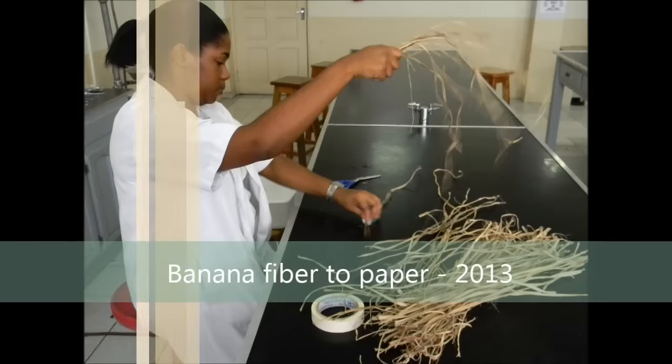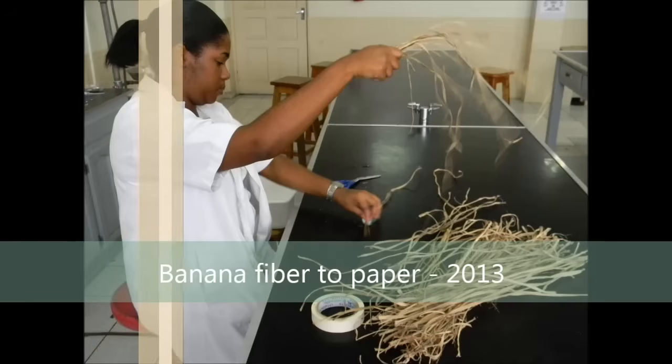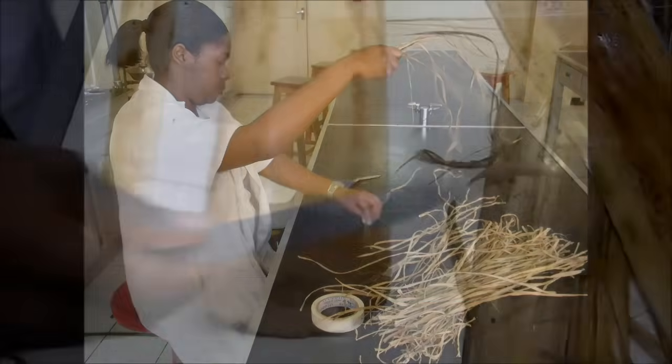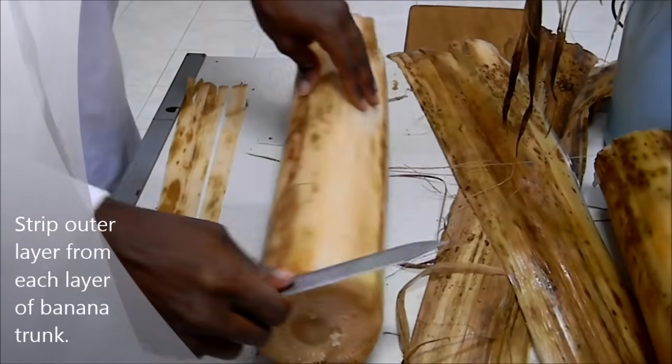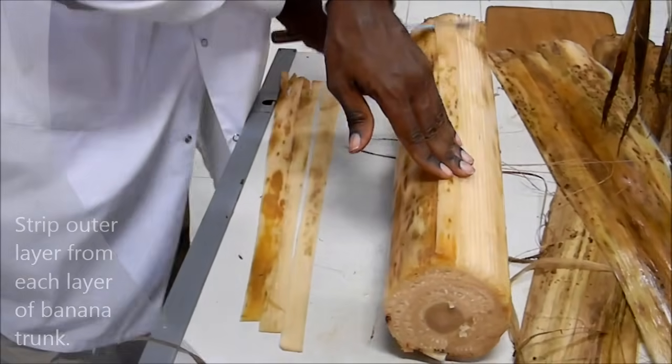Today we'll be learning how to convert banana fiber or general plant fibers into paper. First you remove the outer strip of the layers from the banana plant and slice thinly near the surface.